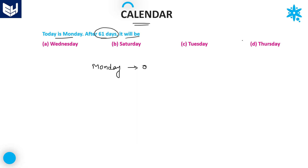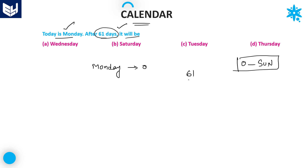The week always starts with zero, and that is Sunday. But here the condition mentions today is Monday, and we don't know for certain today is Monday — that is the reason we take zero as Monday. Now we need to find the number of odd days in 61 days. To calculate odd days, always divide by 7. Once the weeks are removed, the remaining days are called odd days.